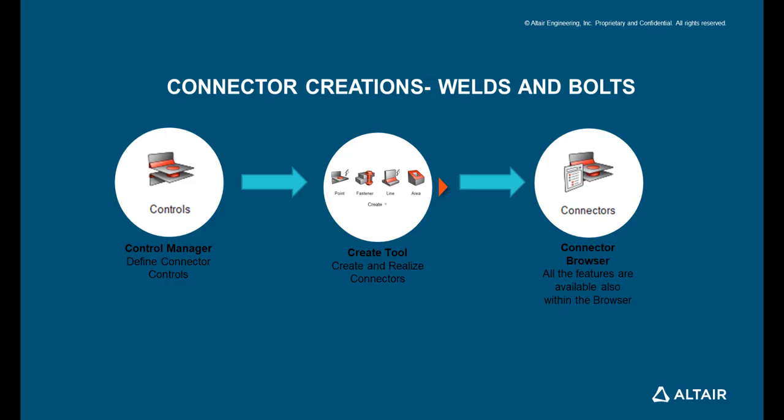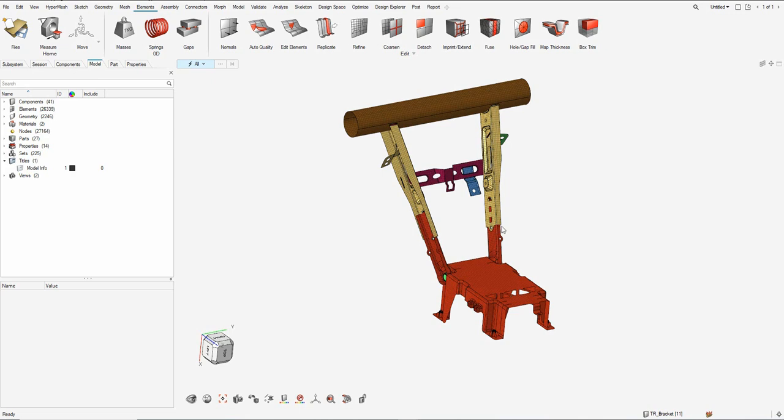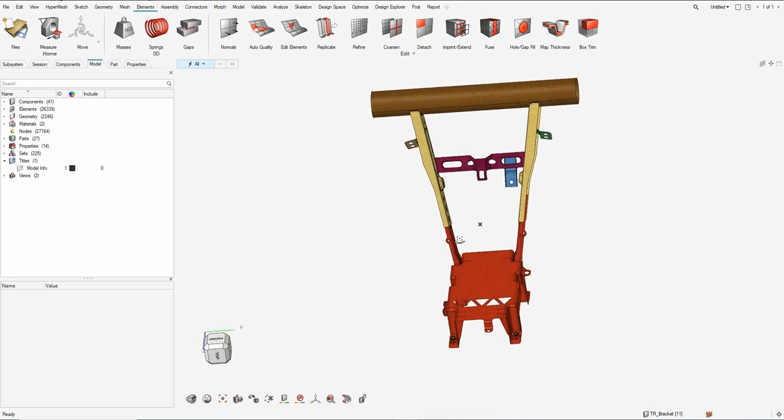In this video we will be going through the connectors paradigm of creating connectors using the connector controls for defining the welds and the fasteners. Now that we have completed the meshing of sheet metal parts and the cast part, we will go about defining the connections for the welds and the bolts through the connectors creation. Let's have a closer look at the model.